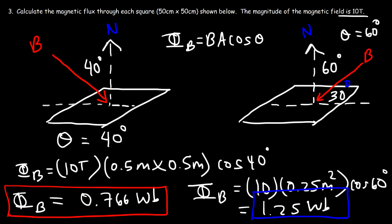So now you know how to calculate the magnetic flux through a surface — it's simply the magnetic field times the area times cosine θ, where θ is the angle between the magnetic field and the normal line. Don't forget that. Thanks for watching.